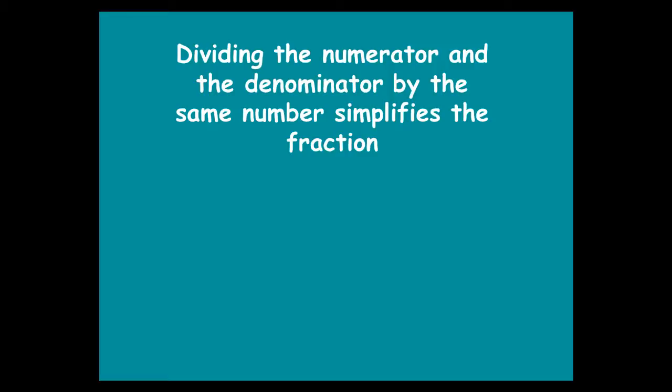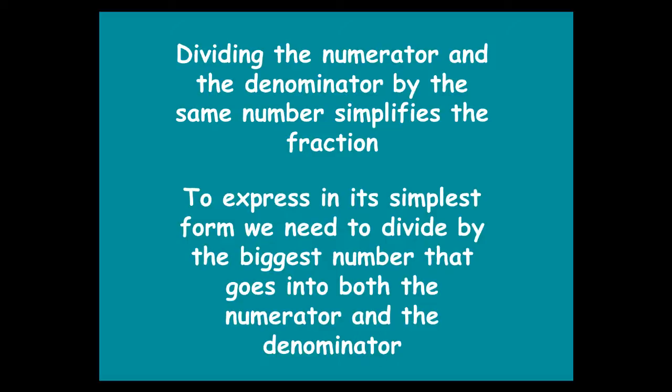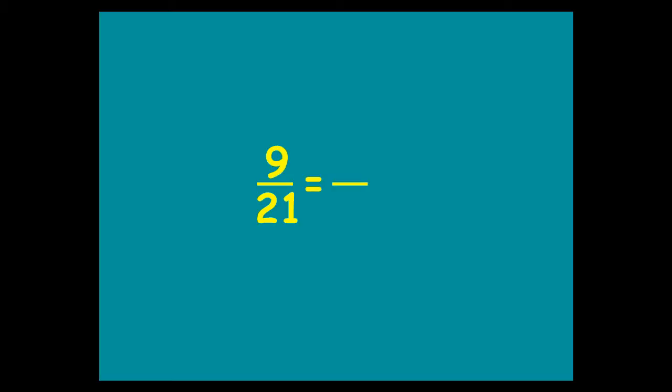So, to simplify a fraction, all you do is divide the numerator and the denominator by the same number. To work out what number you should divide by, you've got to make use of your knowledge of times tables — and the bigger the better. You can sometimes simplify in one step, or sometimes you might take a couple of steps to get to your fully simplified fraction.